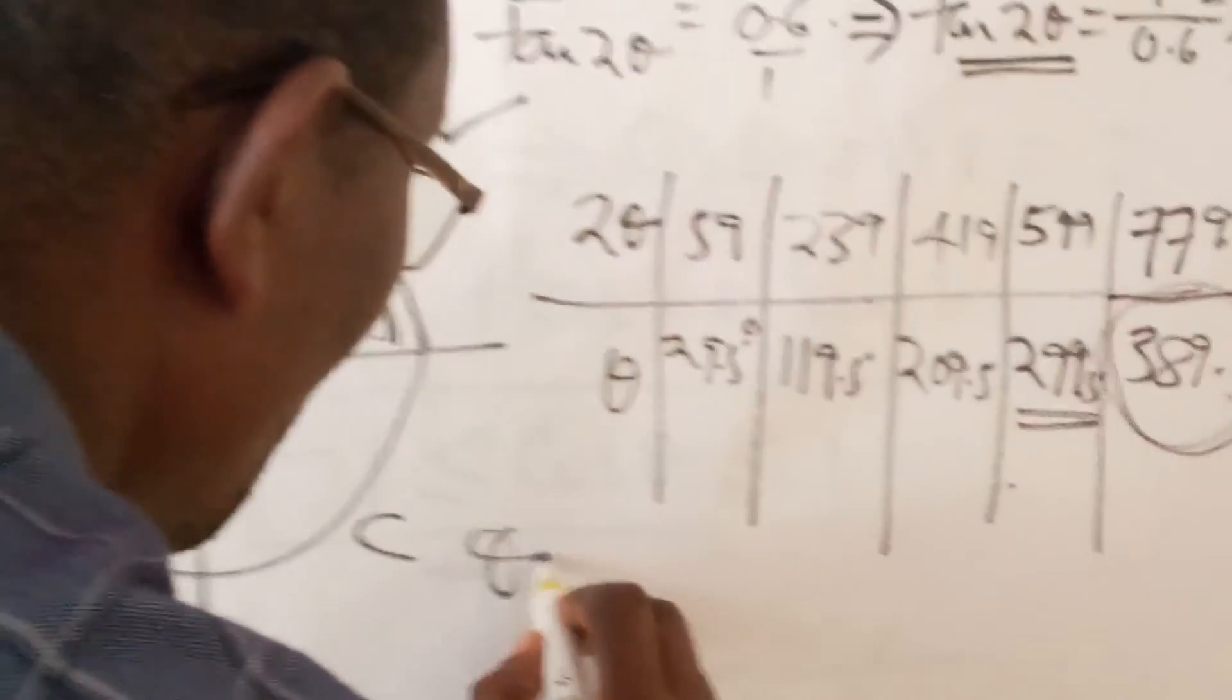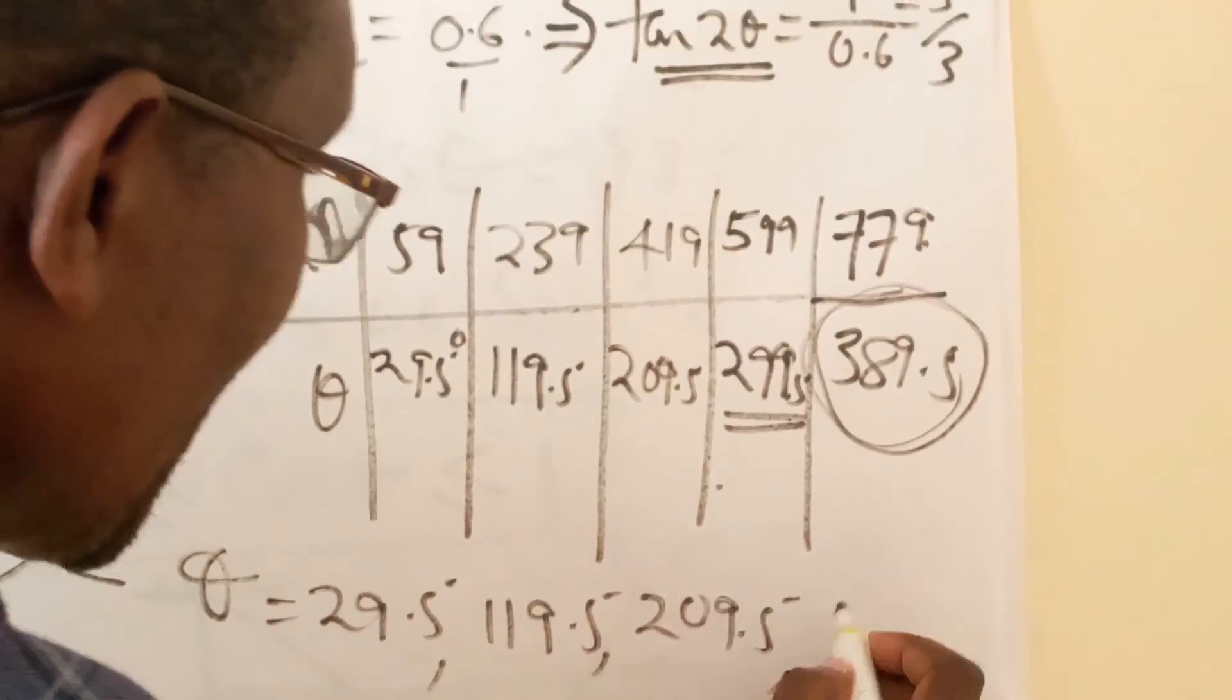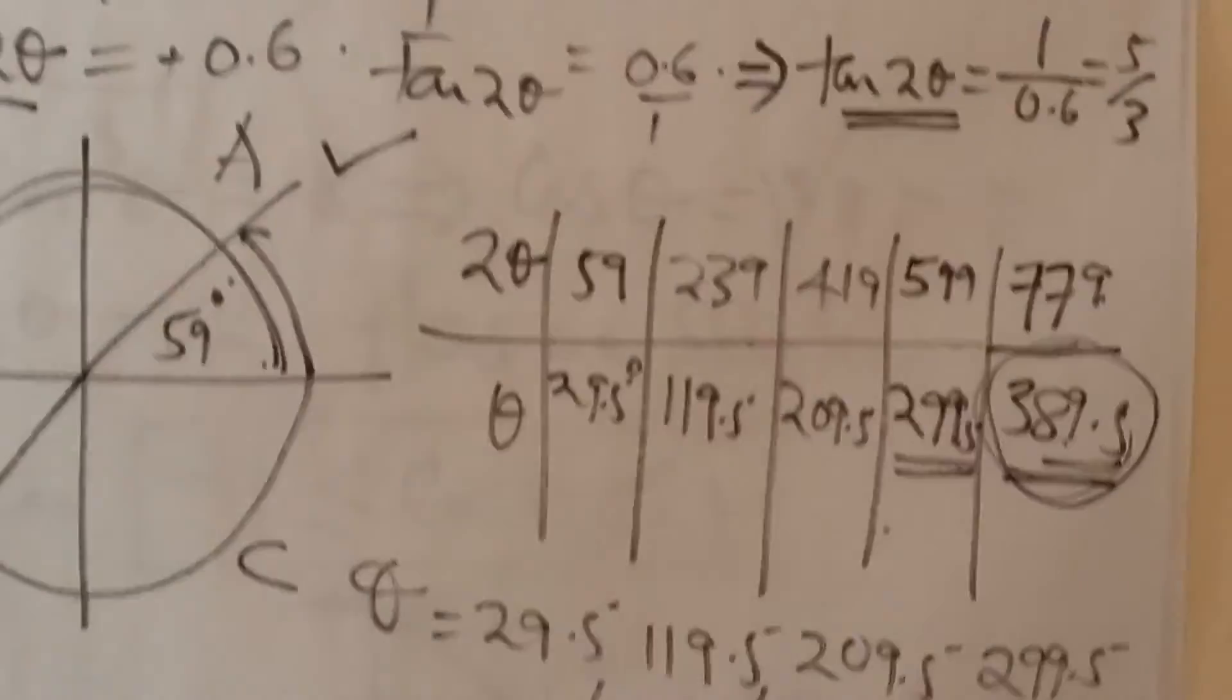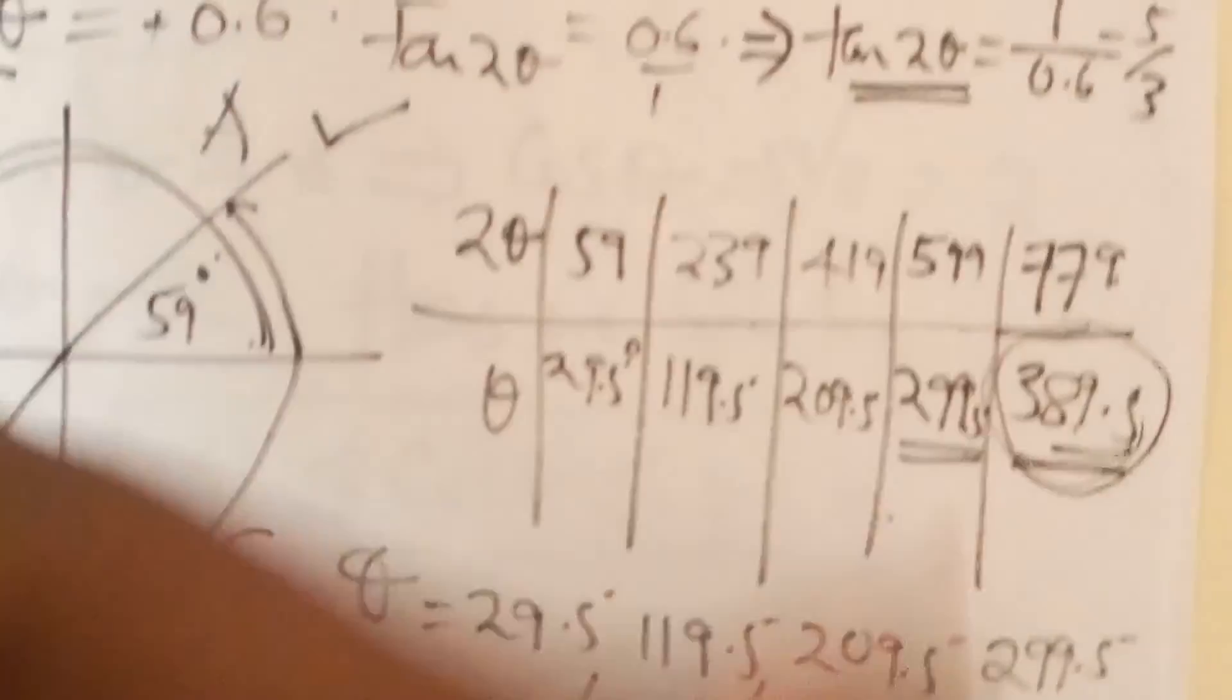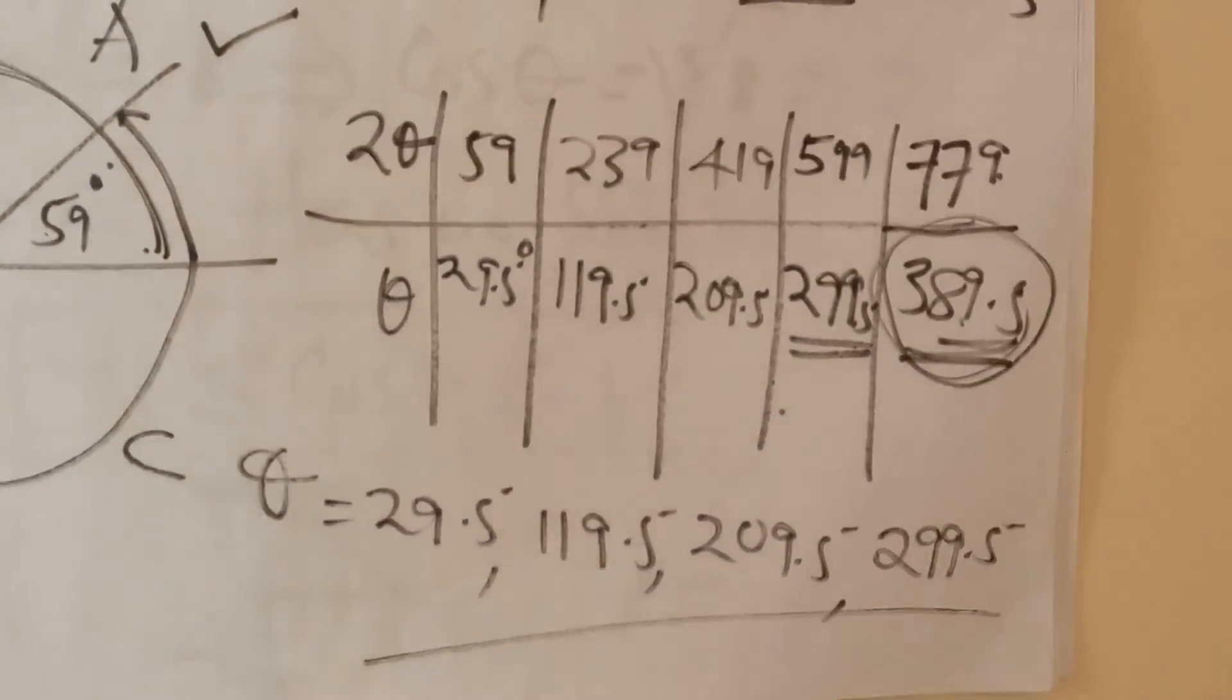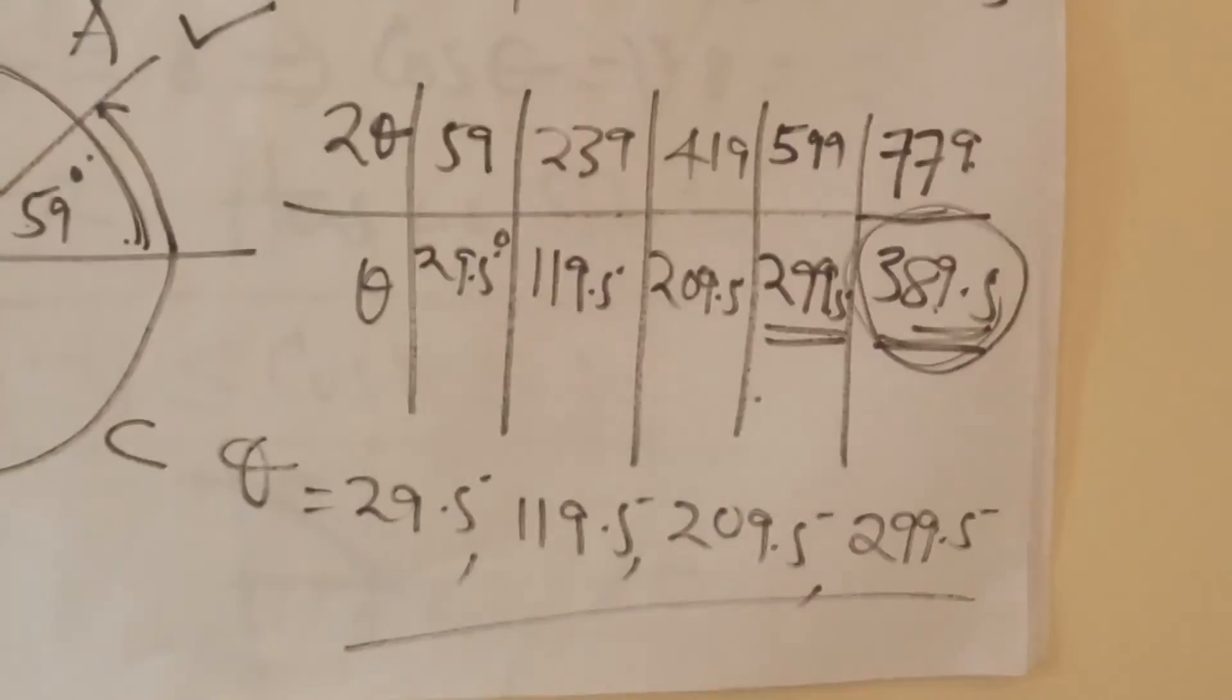So our value of theta is 29.5, 119.5, 209.5, and 299.5. That one is not inclusive because it's far beyond the range. Please note that sometimes you are expected to divide depending on the nature of the question, but this is nothing new. We have looked at that in pure mathematics 2, and this is pure mathematics 3. Please find your own position and move on.